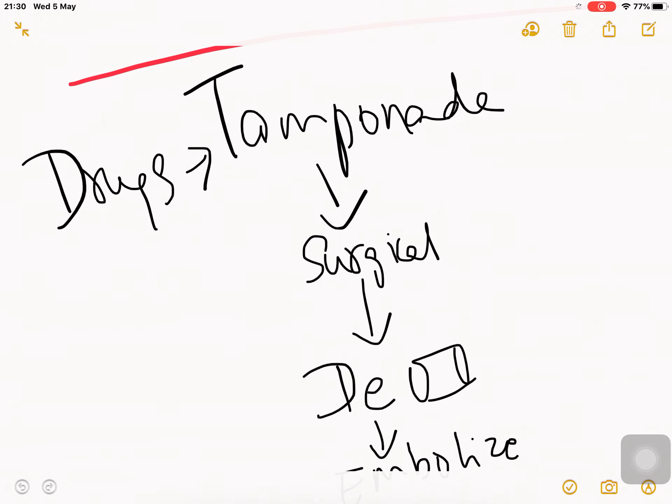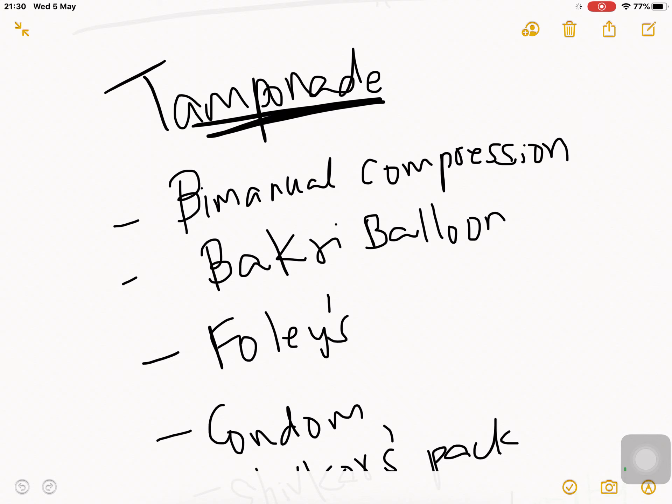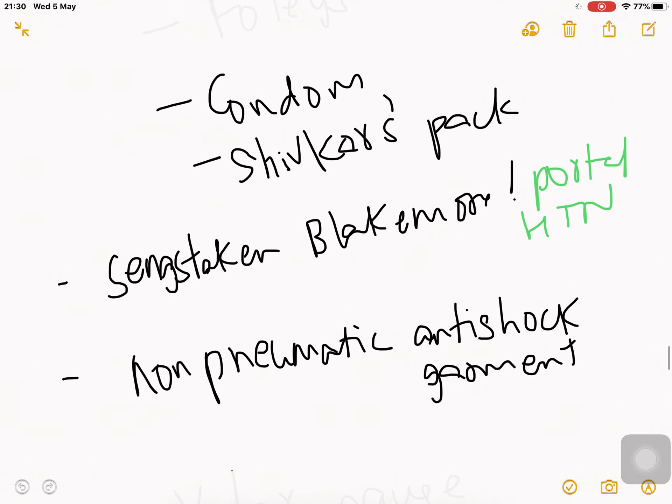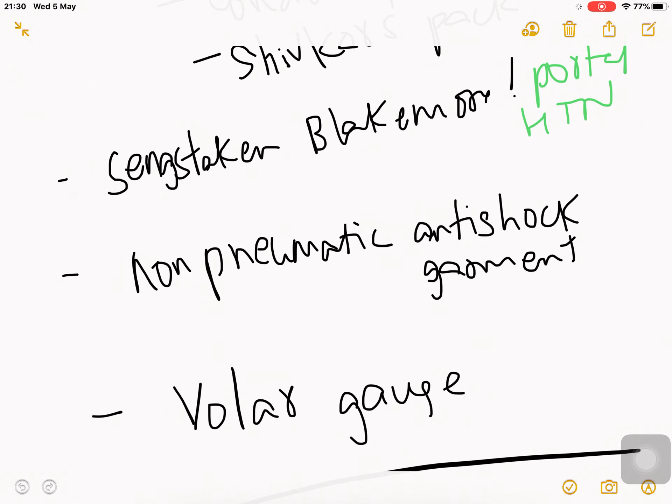First, start the person on IV drip and give blood. Blood was drawn for blood grouping and cross matching. We're waiting for blood to arrive. Until that, give crystalloids and start the drugs. Then tamponade. Tamponade methods include bimanual compression, Bakri balloon, Foley's tamponade, condom tamponade, gauze pack, Sengstaken-Blakemore tube used for portal hypertension, and non-pneumatic anti-shock garment.